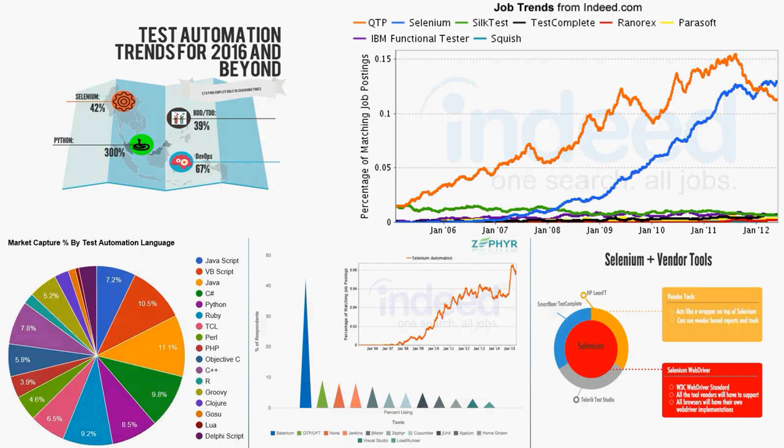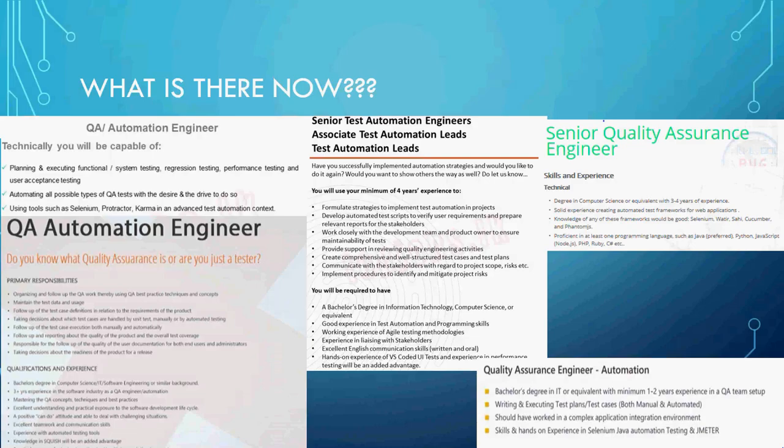If you look at job trends in the industry, there are a lot of other tools demanded by organizations. You have to learn not just Selenium but also Protractor and Nightwatch.js. Even for Windows automation, you need to learn commercial tools like Squish and non-commercial tools like Winium and Katalon Studio. You need to learn these tools to achieve your target of being a great test automation professional.